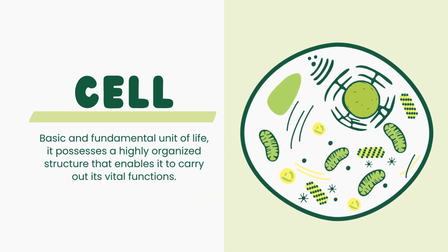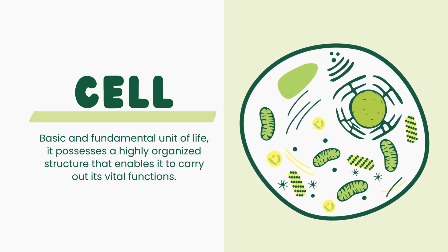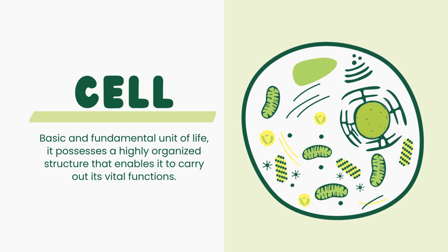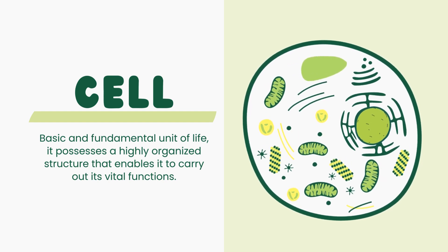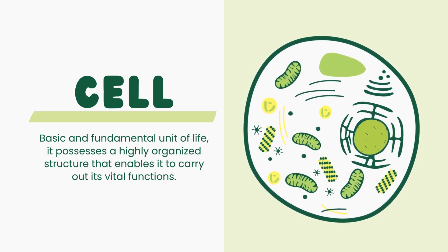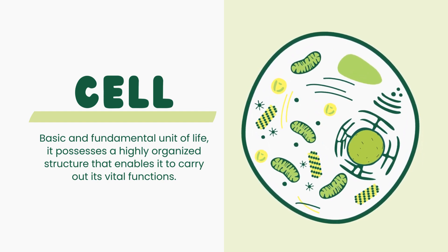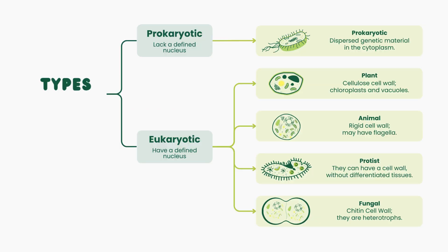A cell is the basic and fundamental unit of life, possessing a highly organized structure that enables it to carry out vital functions necessary for an organism's survival. Cells can be broadly classified into two types: prokaryotic and eukaryotic. Prokaryotic cells lack a defined nucleus, while eukaryotic cells have a nucleus enclosed within a membrane. Let's explore further.